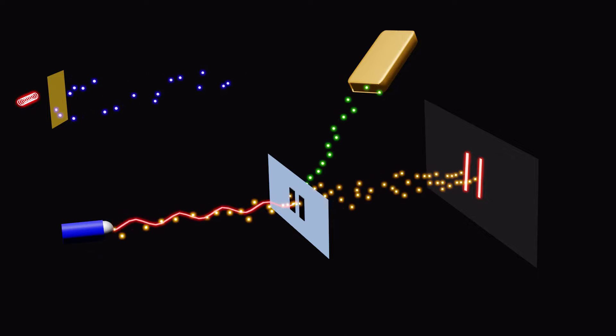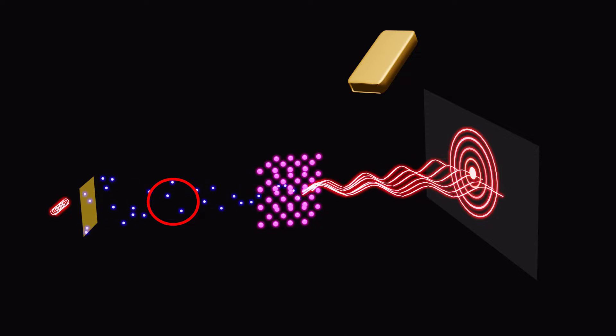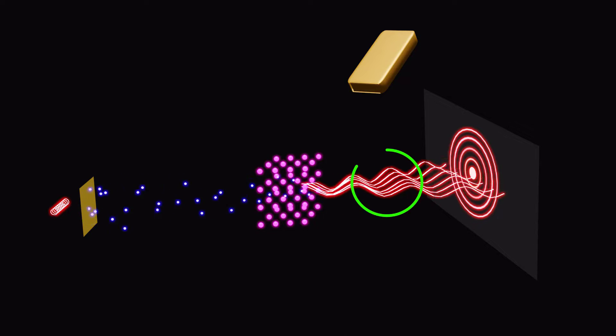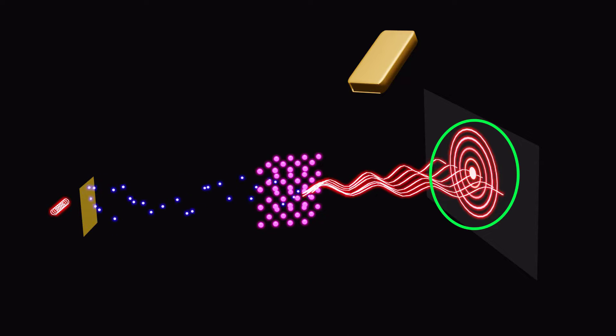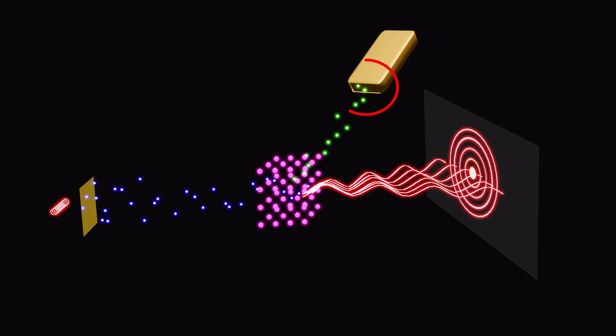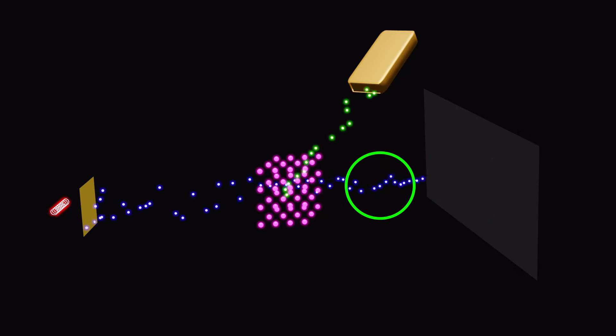Wave particle duality is not limited to light. This is also true for matter. Electrons, for example, can display wave-like behavior when passing through a crystal lattice, diffracting like waves. When we try to measure the precise position of an electron, its wave-like behavior disappears, and it behaves like a particle.